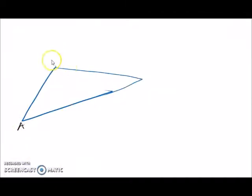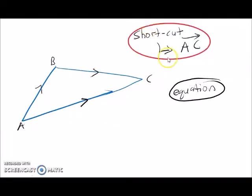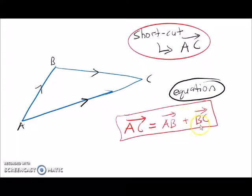Now I'm going to show you how to make an equation from this shortcut. We have A, B, and C with arrows. To make an equation, once you obtain the shortcut AC, put a direction arrow — this is our vector notation. We make it equal to the other vectors: AB plus BC. This is the vector equation.